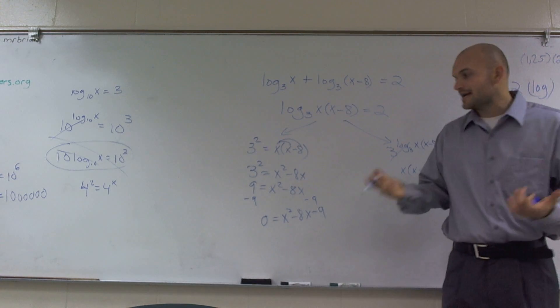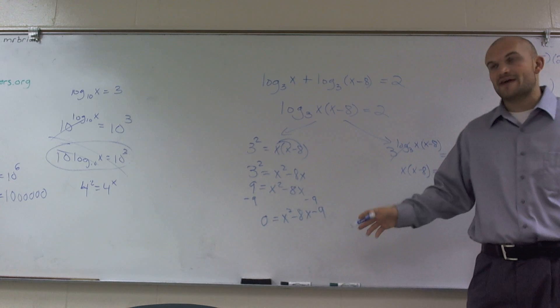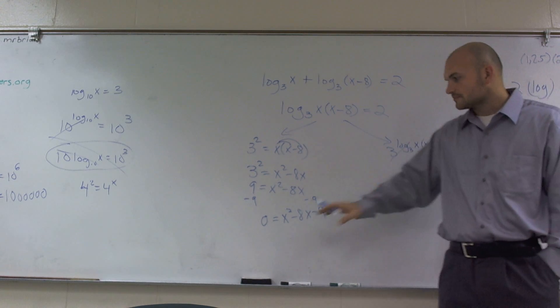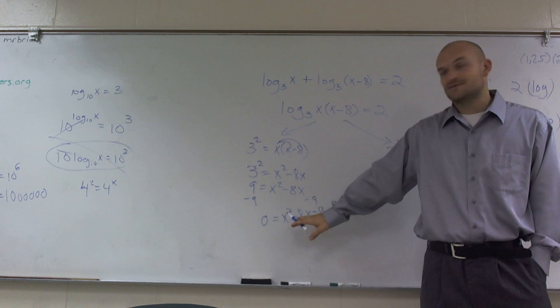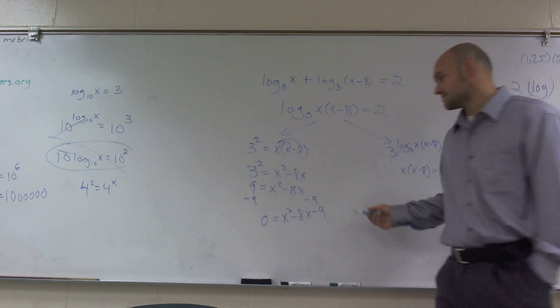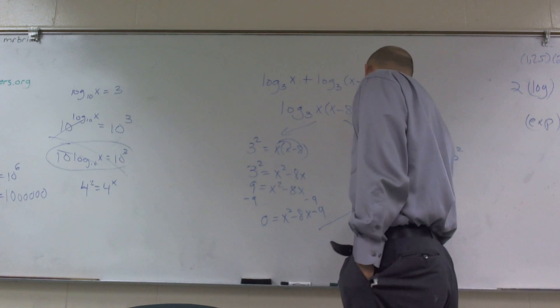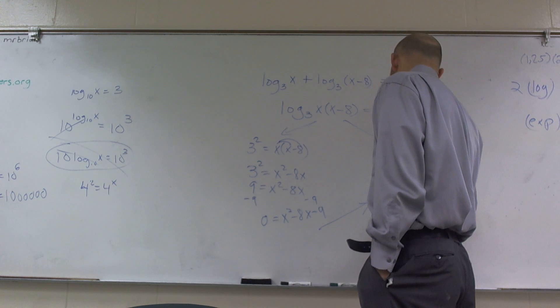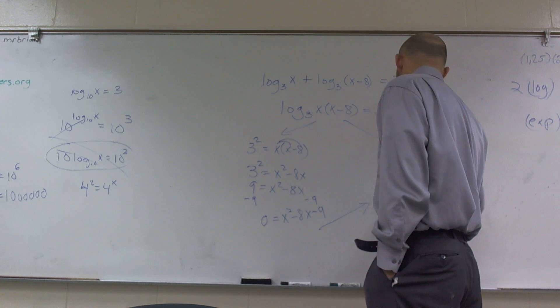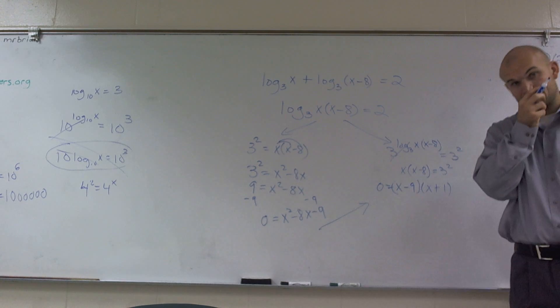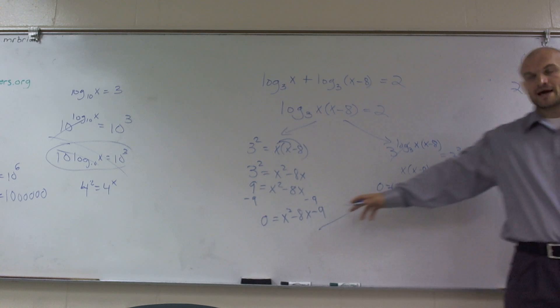So first of all, I always want to see, can I factor this? Yes. And I want to see, can I factor it as, I'm sorry, I want to see if I can factor this as it's set equal to zero. So what I say is, I look at this, and I'm just going to continue the problem over here. I ran out of space. So I can rewrite this as zero equals x minus nine and x plus one, right? The factored form of that.